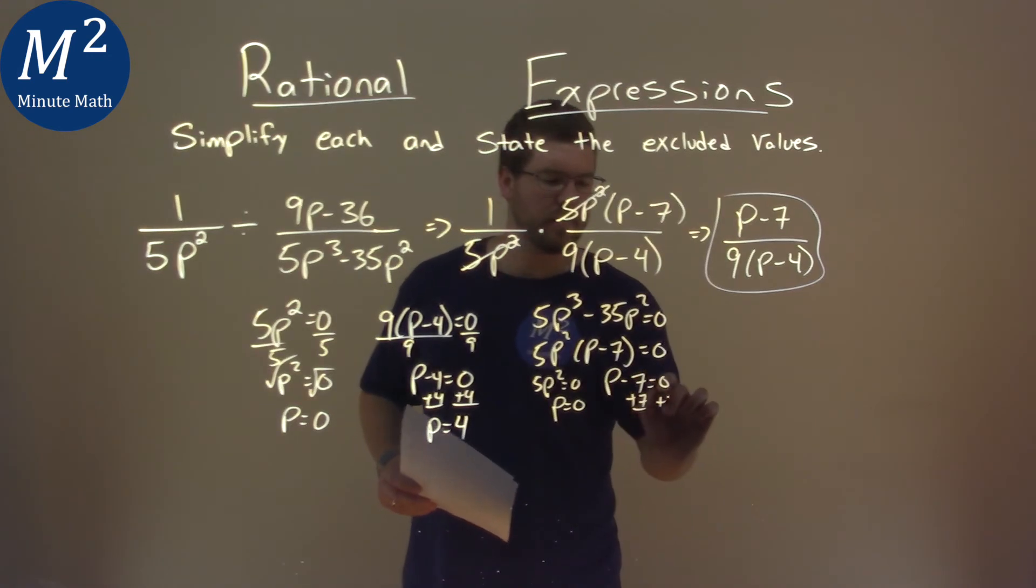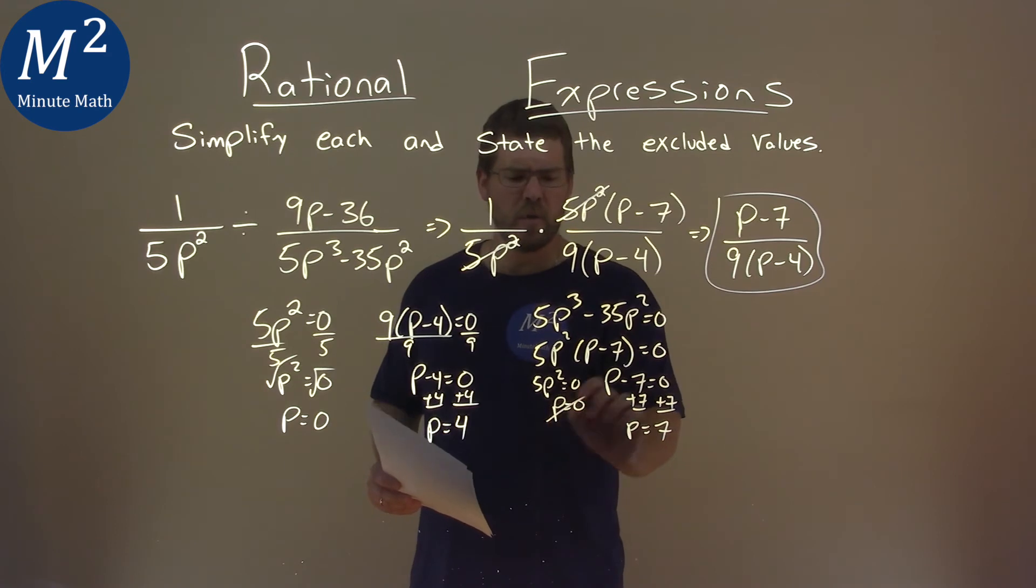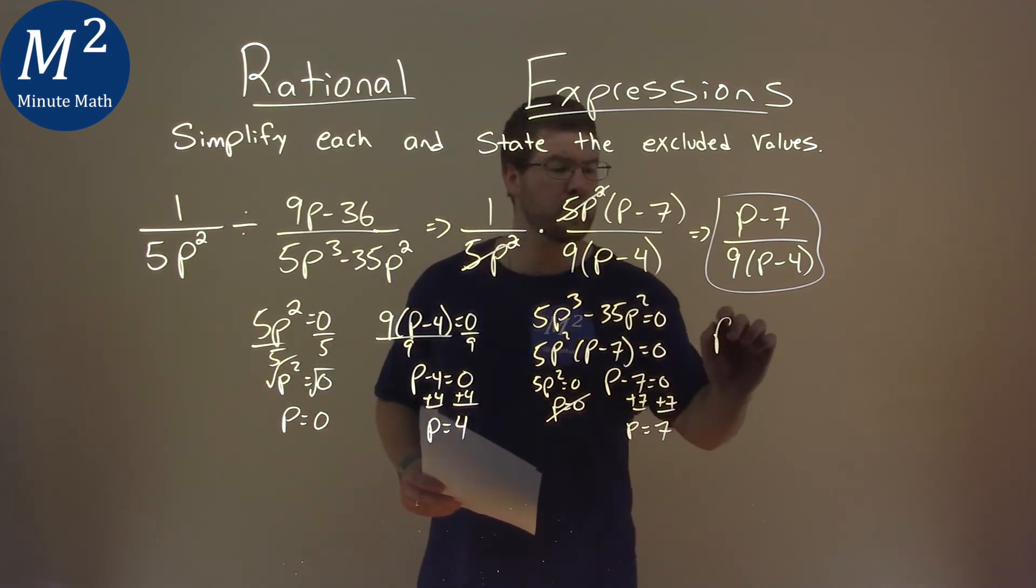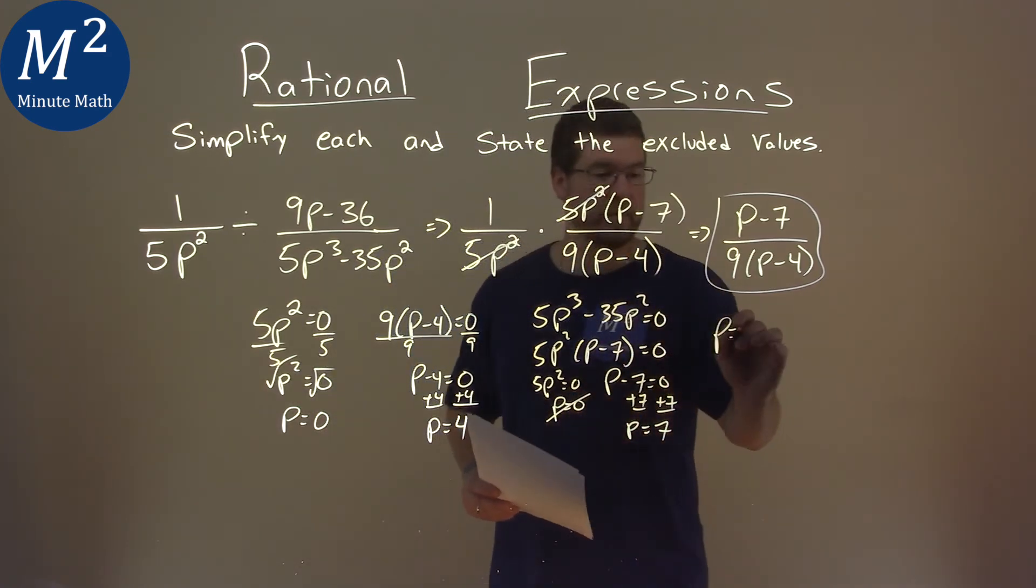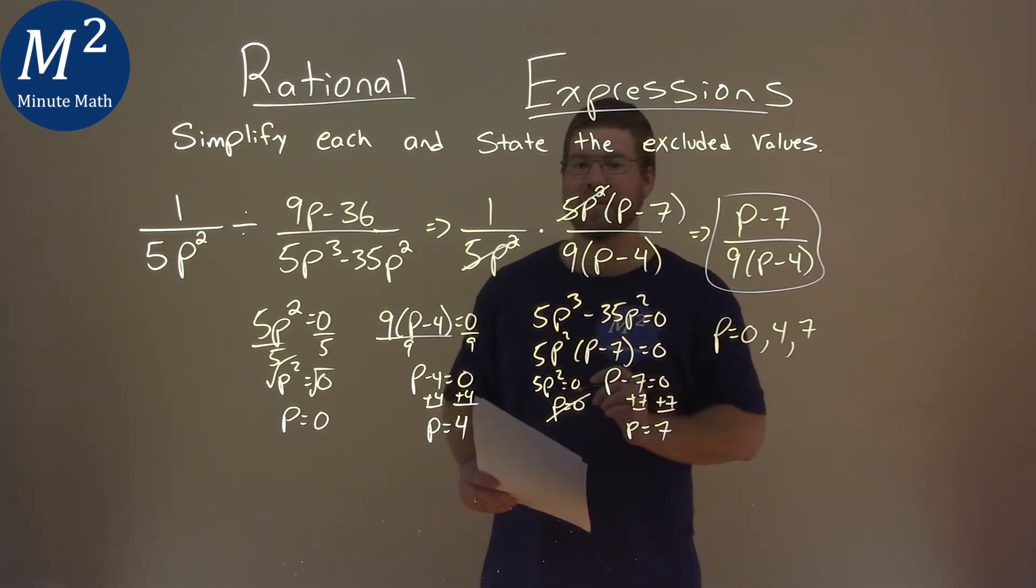We add a 7 to both sides, and we have p equals a positive 7. So we don't need the duplicate 0, but our excluded values here are p equals 0, a positive 4, and a positive 7.